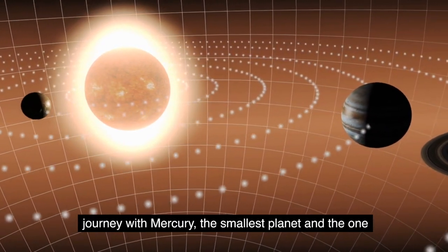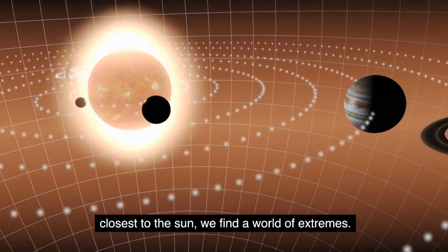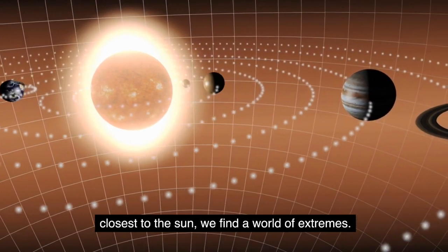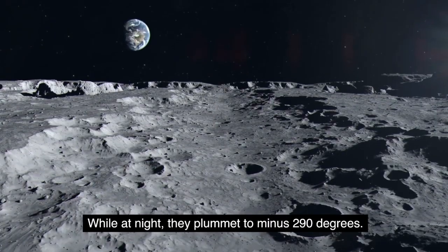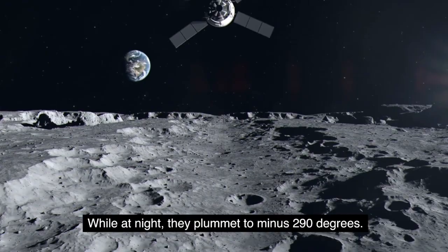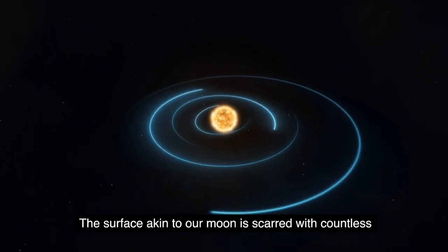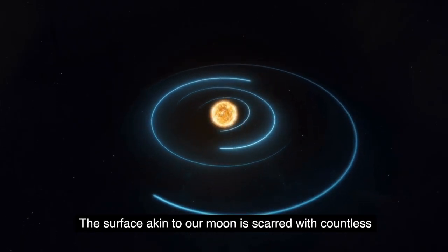Starting our journey with Mercury, the smallest planet and the one closest to the Sun, we find a world of extremes. During the day, temperatures can reach up to 800 degrees Fahrenheit, while at night, they plummet to minus 290 degrees. The surface, akin to our moon, is scarred with countless craters, a testament to its violent past.